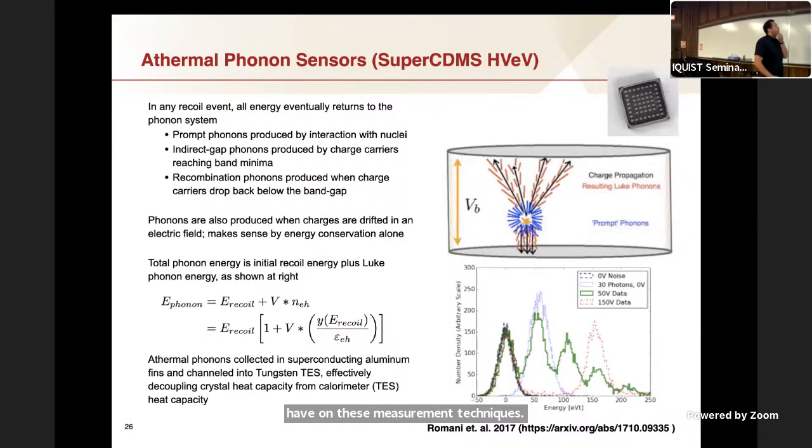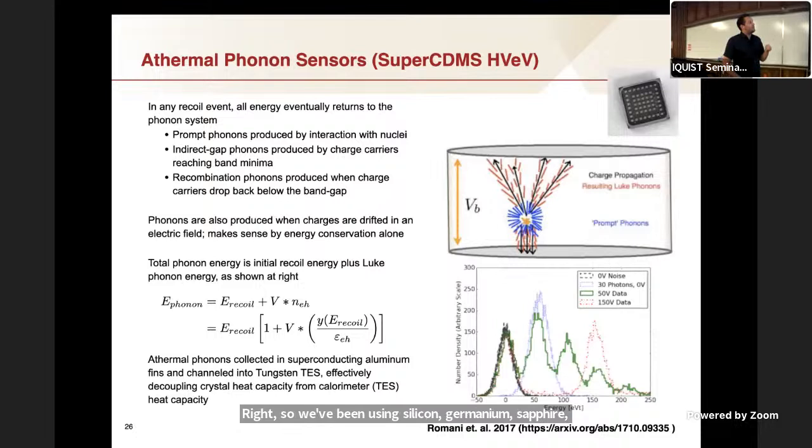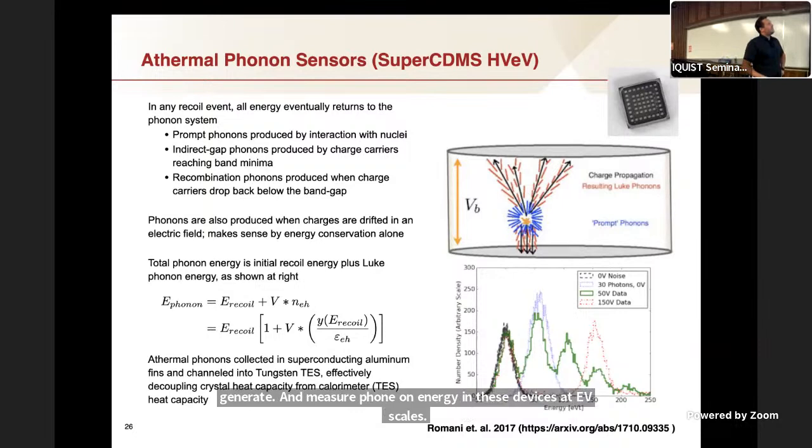There is a fourth approach, which is collecting photons. There's a lot of reasons why at these energy scales, direct collection of photons or production of photons in substrates is not incredibly efficient. At the end of the day, we end up converting the photons back into phonons or charges, and then we do the detection that way. So it's not really a distinct technique. For the bulk of the talk, I want to talk about where we are and where we're going with phonon sensing. We've been using silicon, germanium, sapphire for a lot of our devices, both on the quantum side and the dark matter side for a long time. We have a robust understanding of how to generate and measure phonon energy in these devices at EV scales.